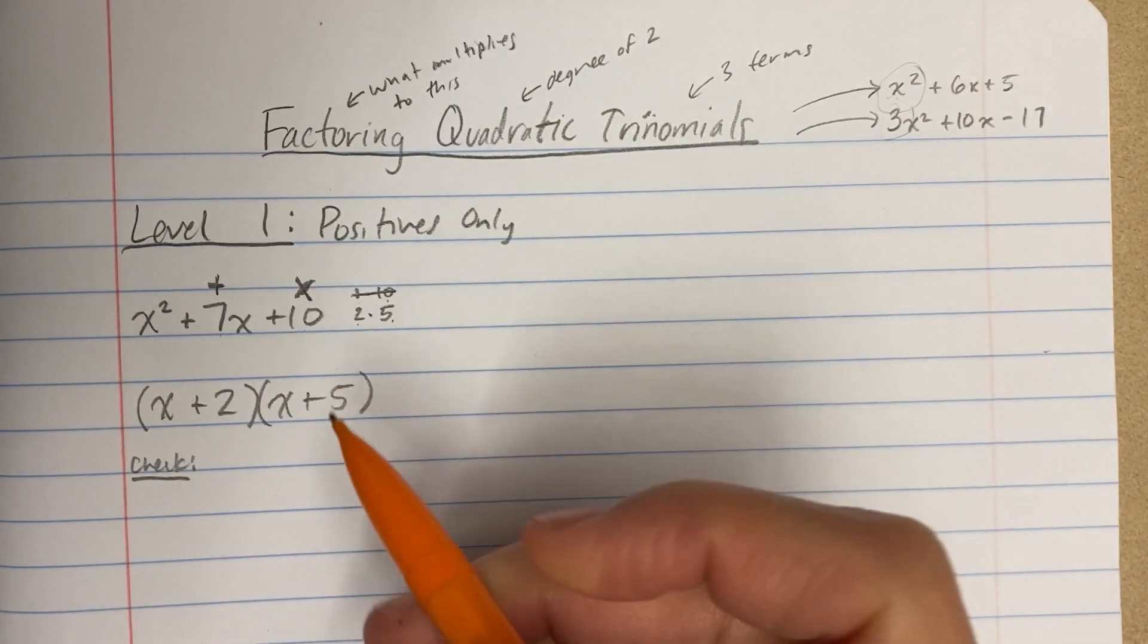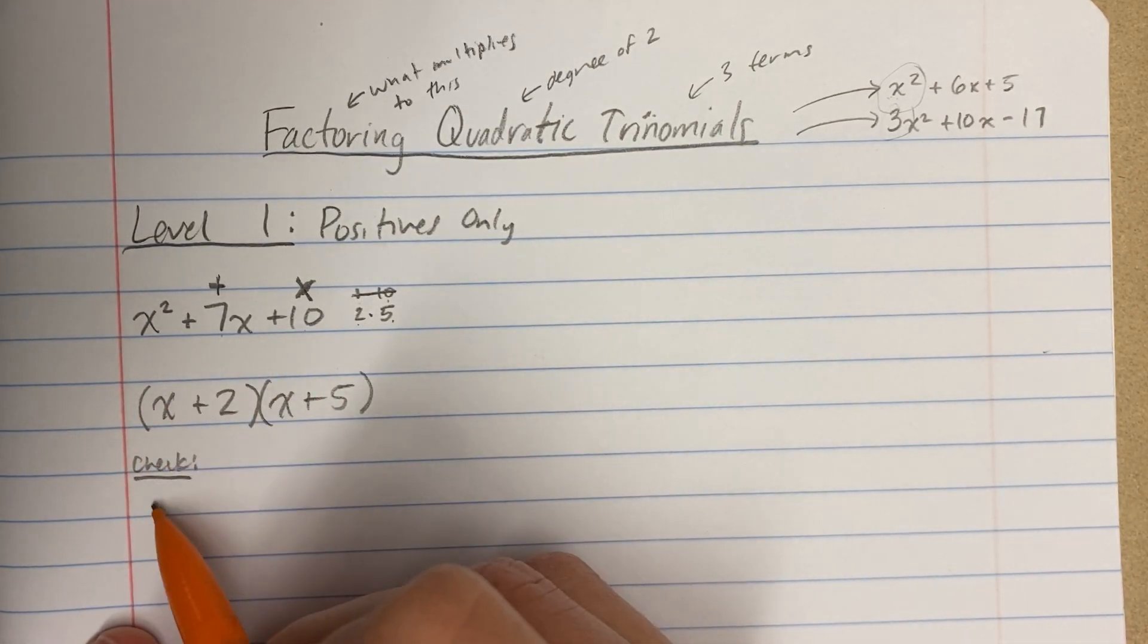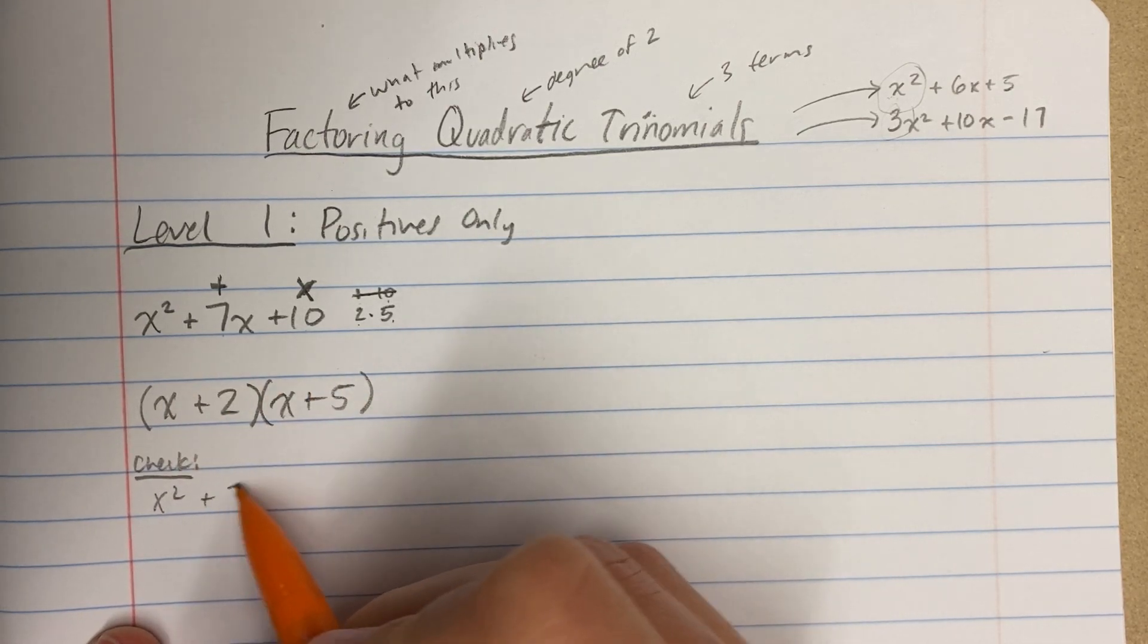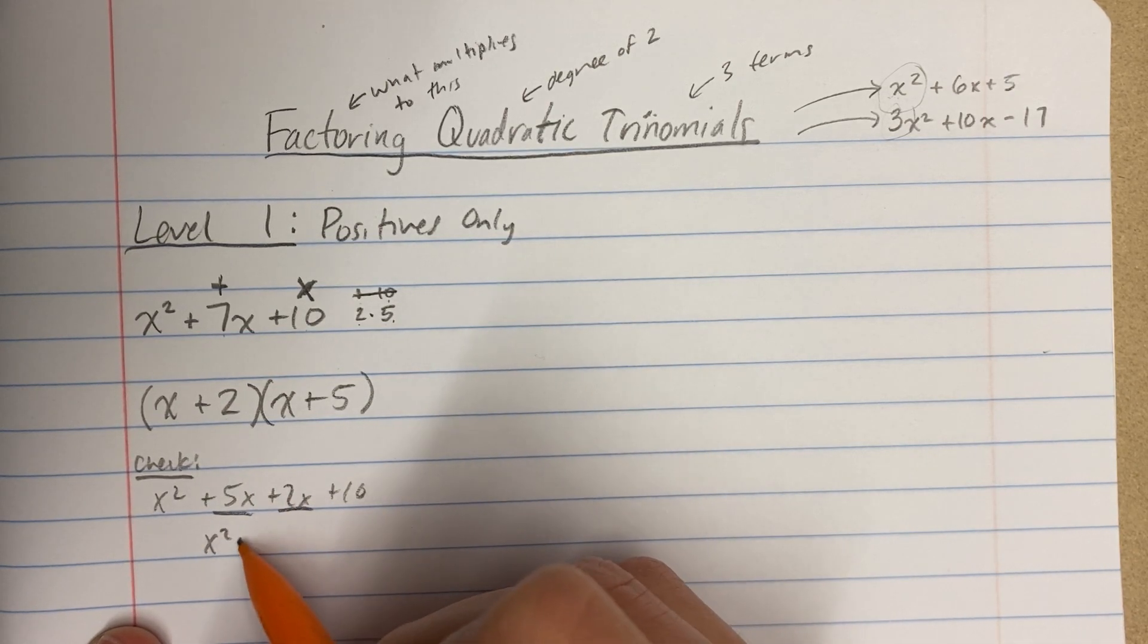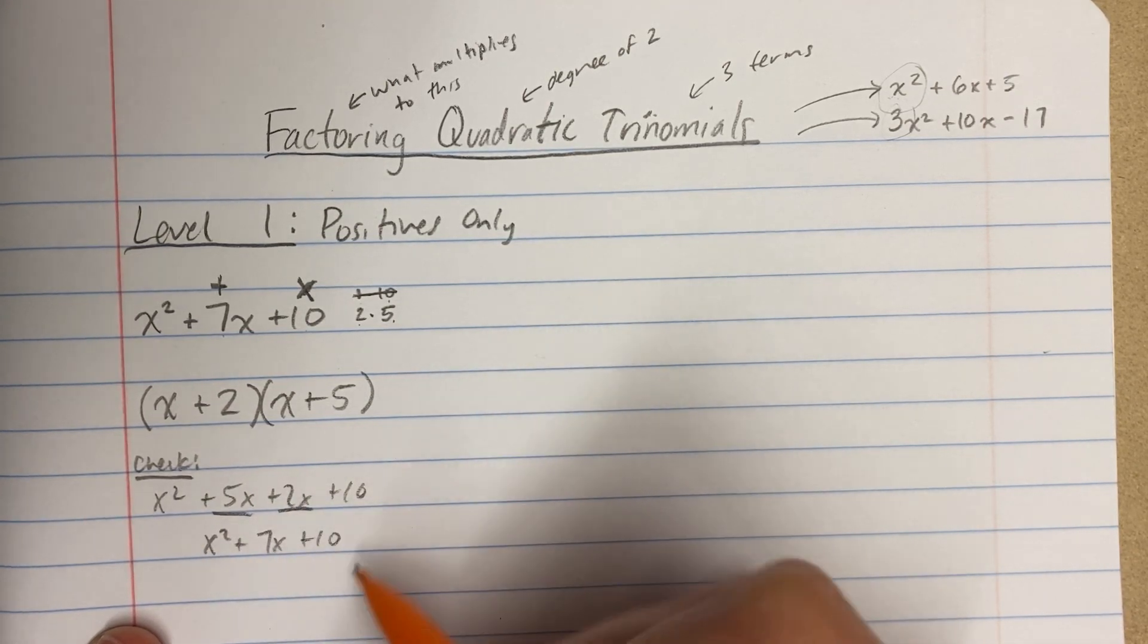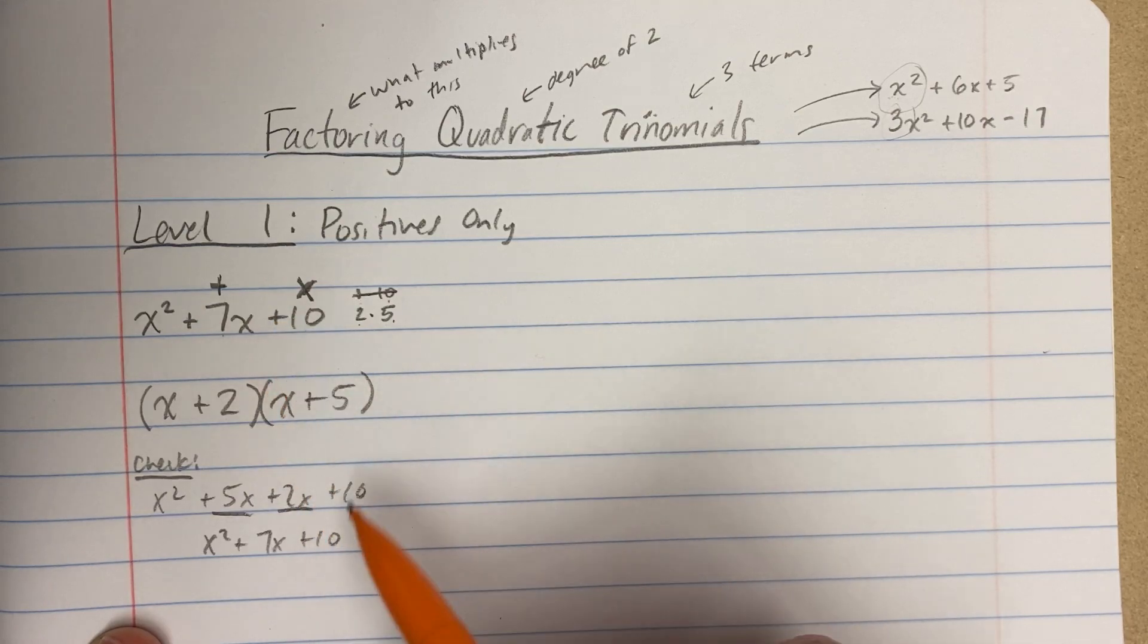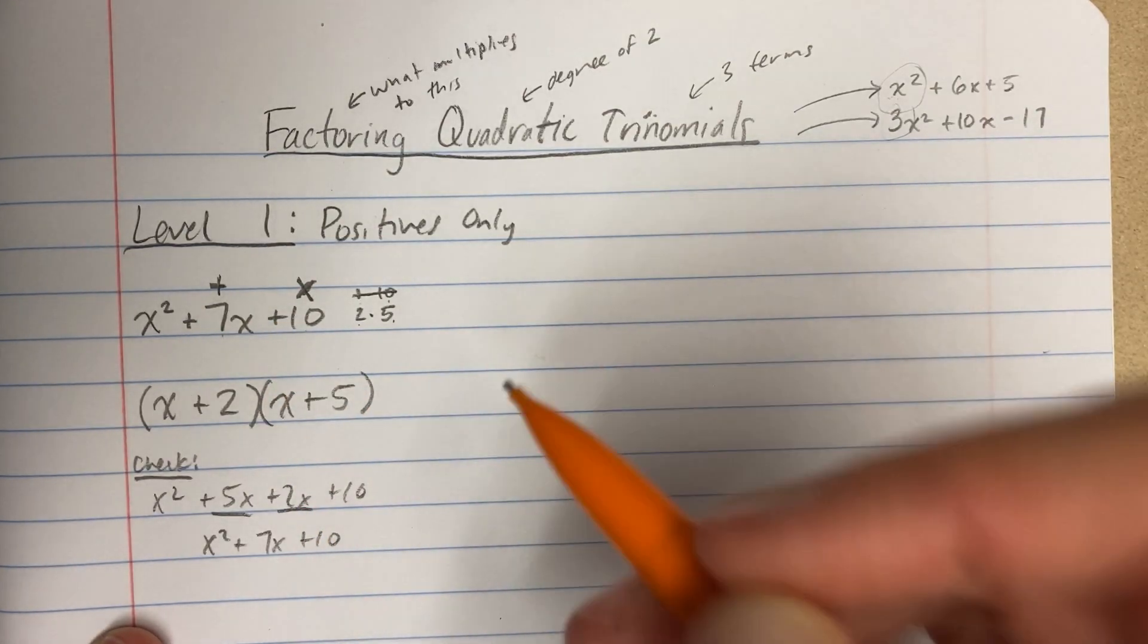And the way that I'm going to check my answer is by multiplying. So I'm going to do x times x. That's x squared. x times 5. That's 5x. 2 times x. That's 2x. 2 times 5. That's 10. I combine my like terms. I get x squared plus 7x plus 10. And sure enough, that is the correct answer.